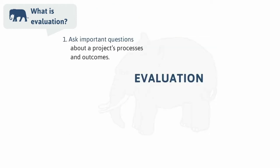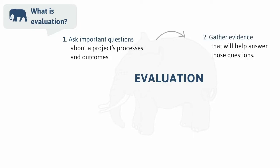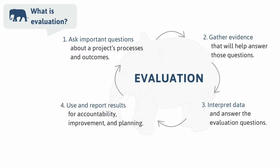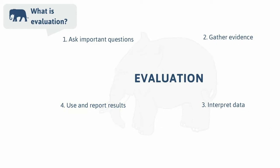Boiled down, evaluation involves four main steps. First, asking important questions about a project's processes, outcomes, and other dimensions — making sure the evaluation focuses on things that really matter. Second, gathering evidence to help answer those questions. Third, making sense of the data by interpreting results and answering the evaluation questions. And the last step is using the information for accountability, improvement, and planning. But it's not really a final step, because evaluation should inform decisions about the next project.